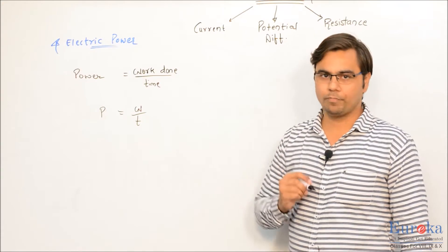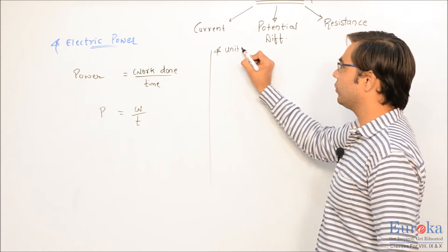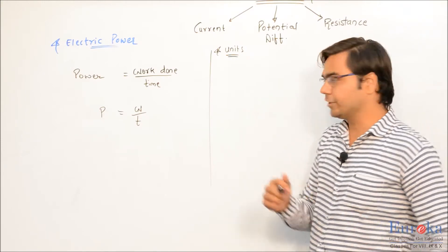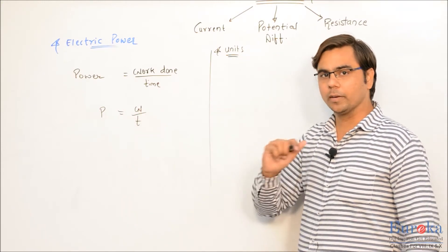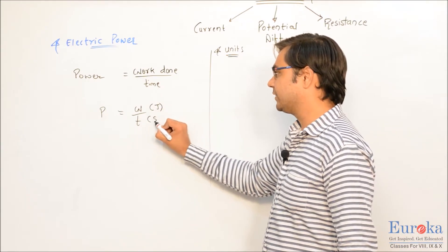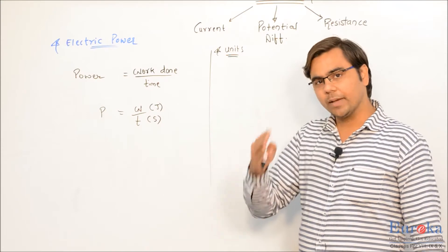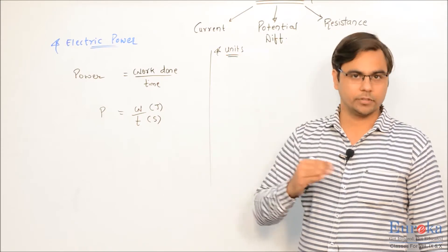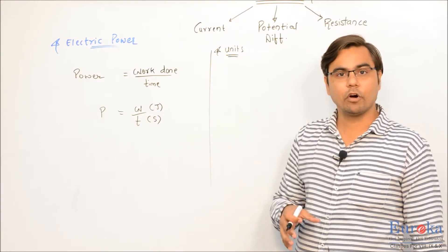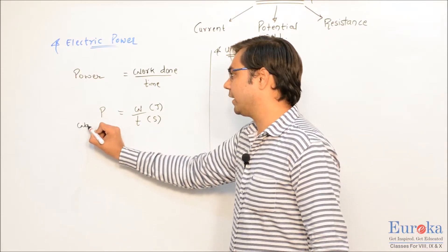To understand the unit of power, whenever you are stuck understanding the unit of anything, you should always try to recall the formula. The formula is power equals work done divided by time. The unit of work done is joule and the unit of time is second, so ideally the unit of power should be joule per second. But on the name of the scientist James Watt — who invented the steam engine and gave valuable contributions to the concepts of power — the unit of power is named Watt, denoted by the letter W.